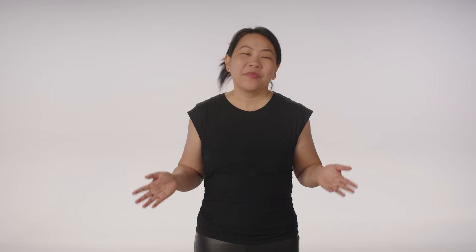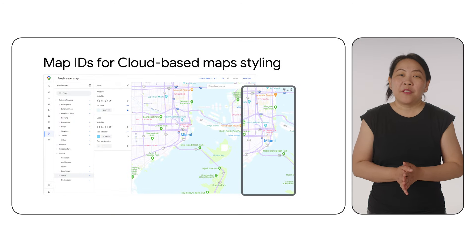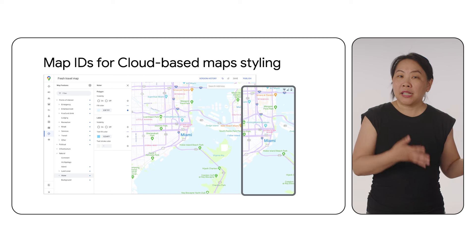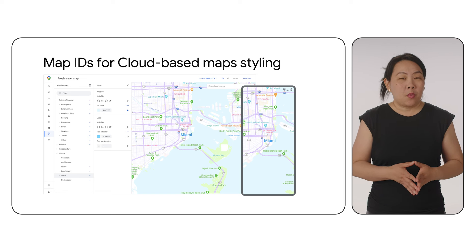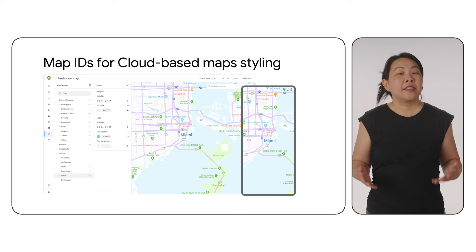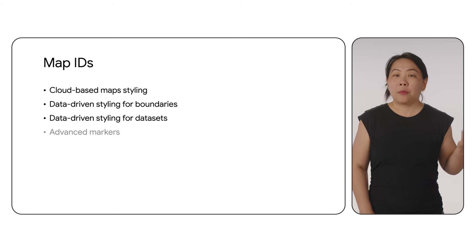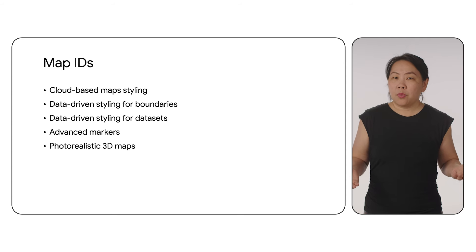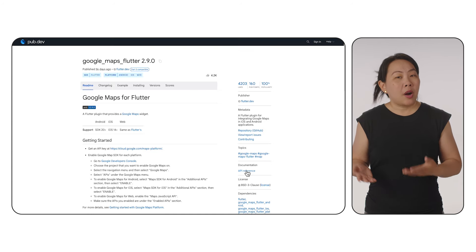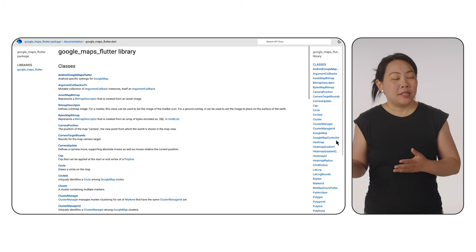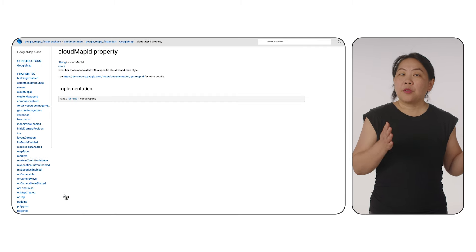First up, we had to add support for map IDs. A map ID is an identifier that's set up in your console to associate a map with a custom style that you've selected for the map. You can read more about cloud-based map styling at the link in the description. This map ID is key to several of the latest features in our Maps SDKs, so it's pretty important to be able to specify it in your Flutter app. It's a property of a Google Map widget, and the property is called Cloud Map ID.